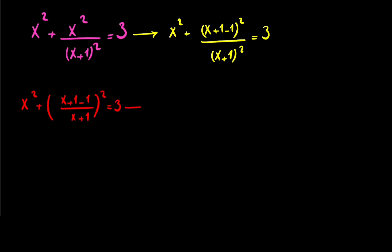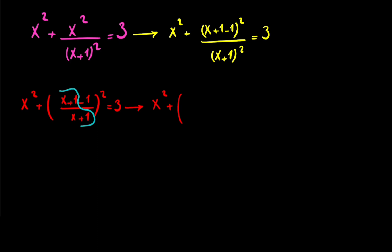So we have x squared plus x plus — let me write it for you — x plus 1 divided by x plus 1, and minus 1 divided by x plus 1. With the same denominator, that gives us 1 minus 1 over x plus 1 squared, equal to 3.